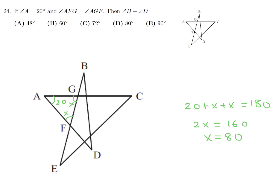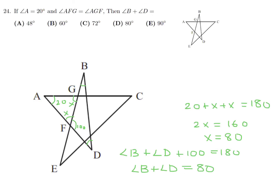Since X equals 80, the angle at F inside the figure is 100 degrees, because angles on a line add up to 180. Now using triangle BFD, angle B plus angle D plus 100 equals 180. Therefore angle B plus angle D equals 80. The answer is 24 is D.